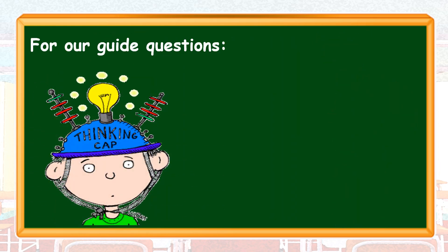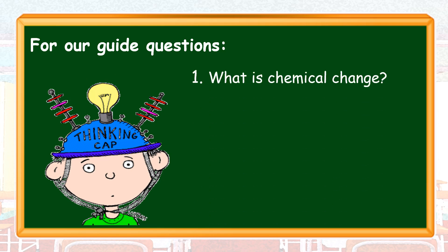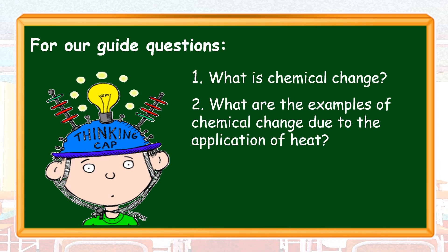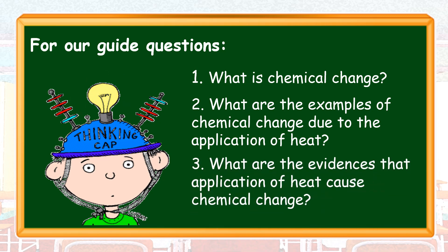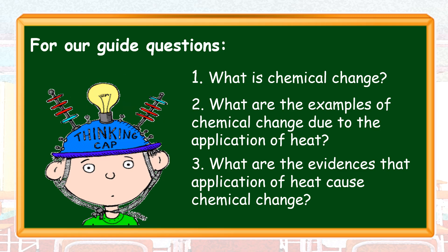For our guide questions: Number one, what is chemical change? Number two, what are the examples of chemical change due to the application of heat? And number three, what are the evidences that application of heat caused chemical change?